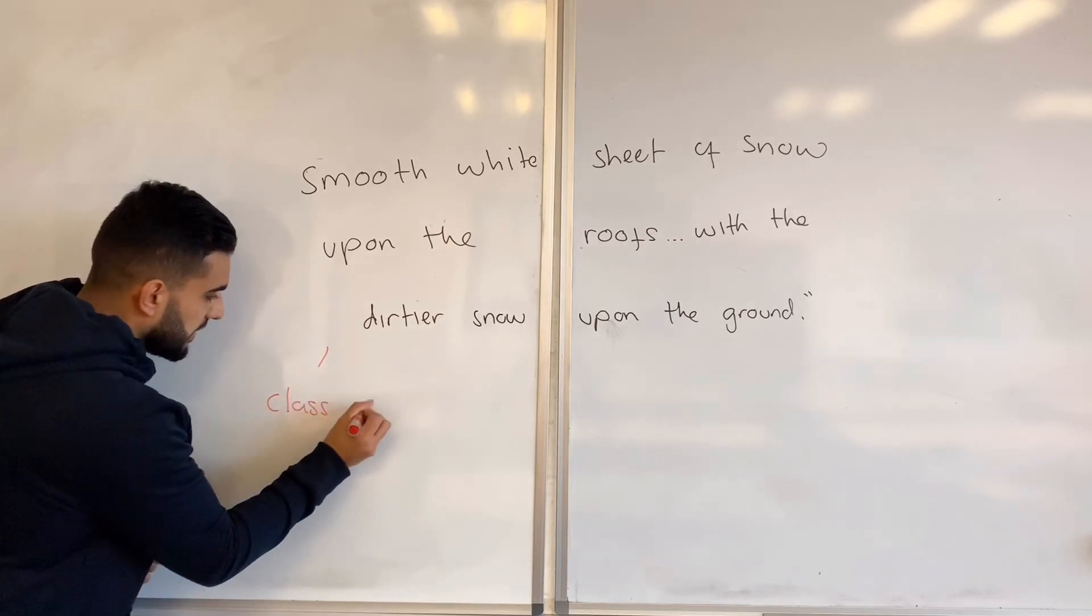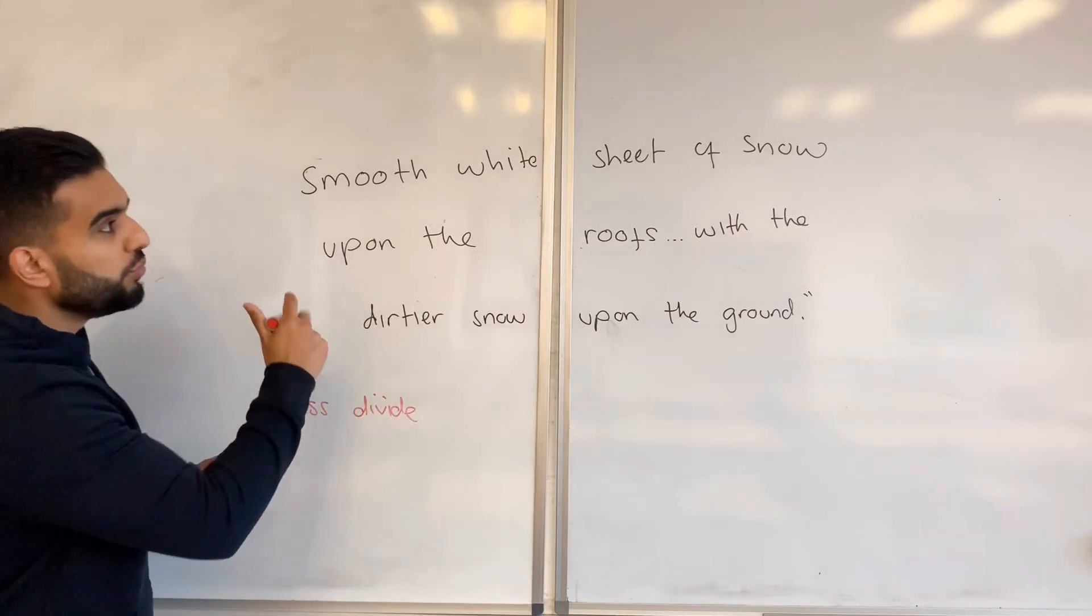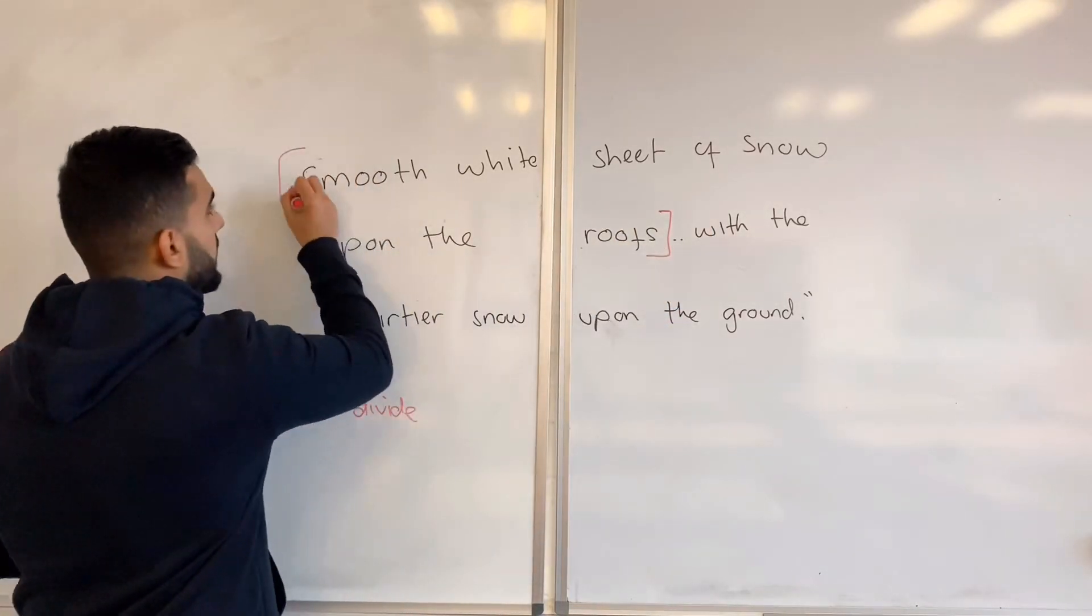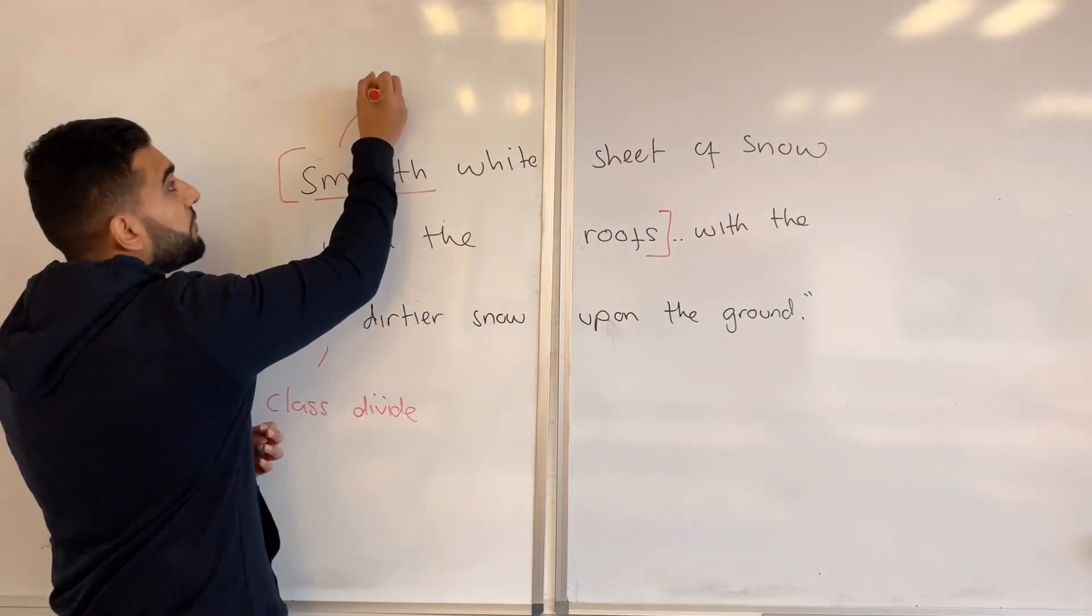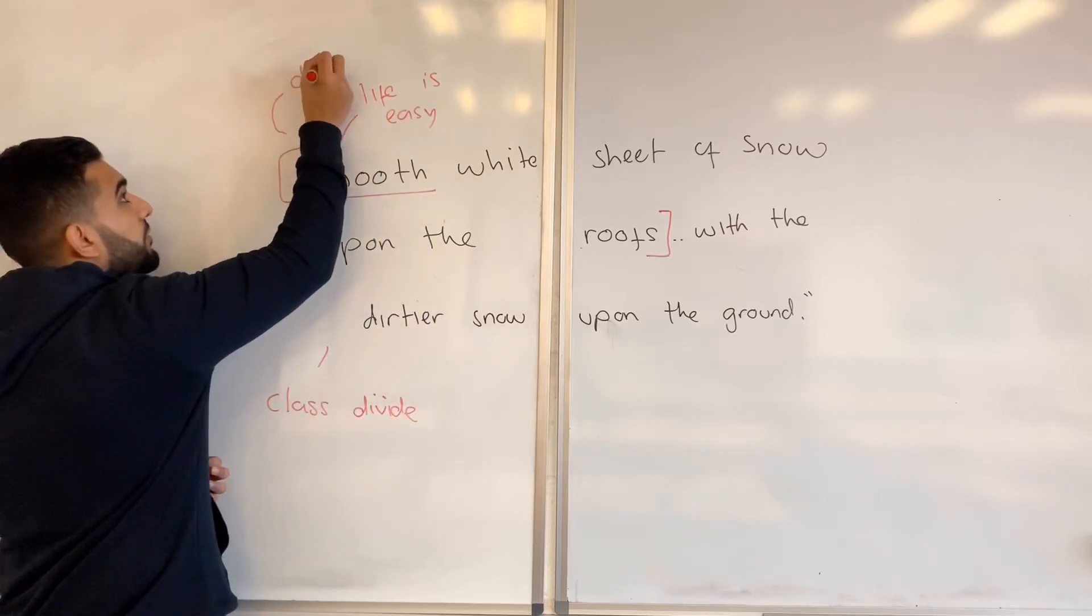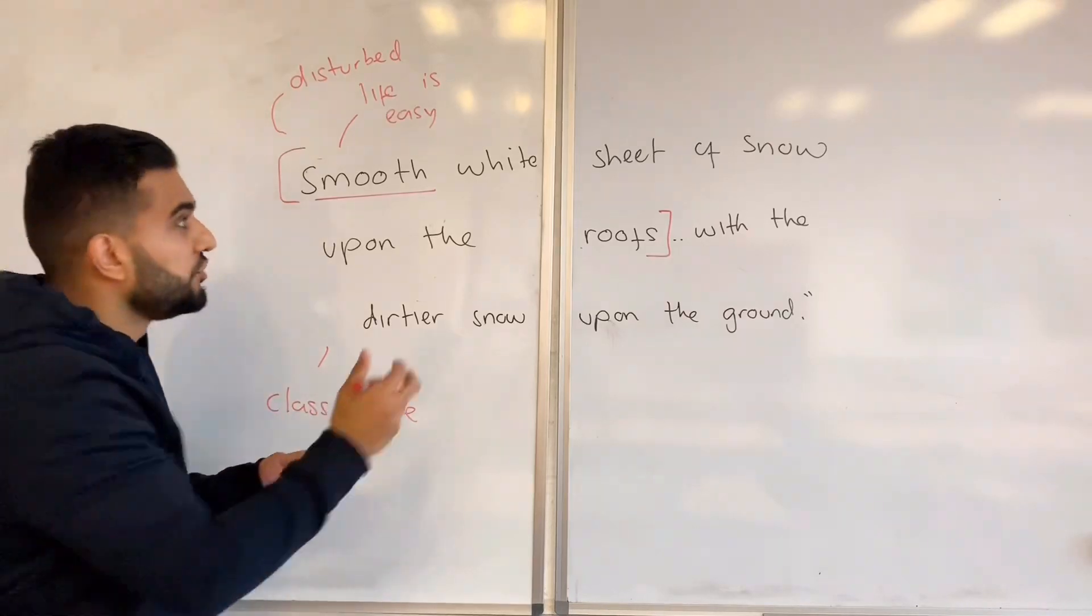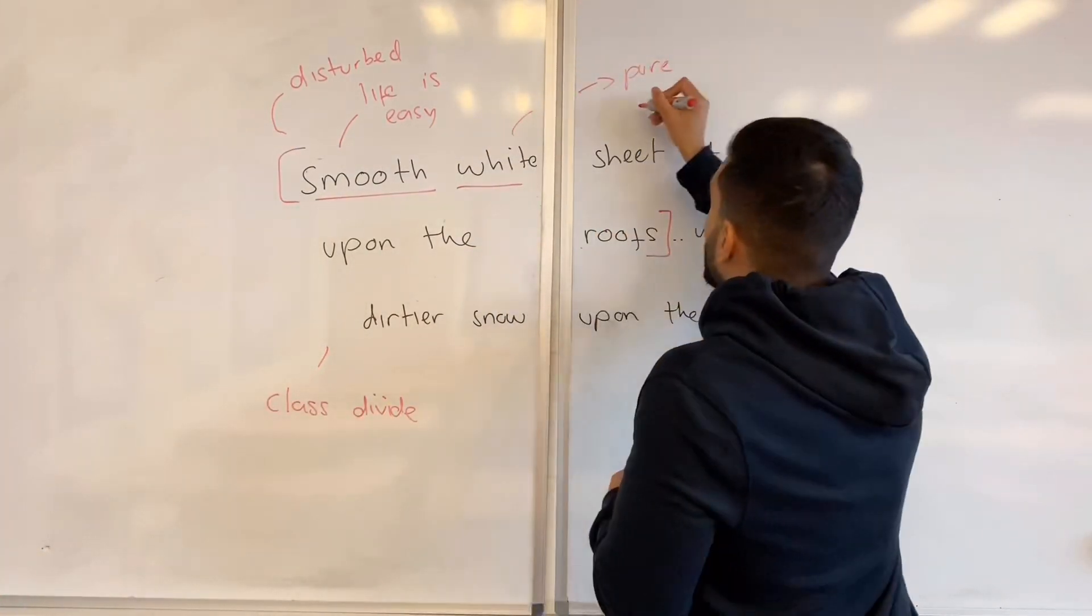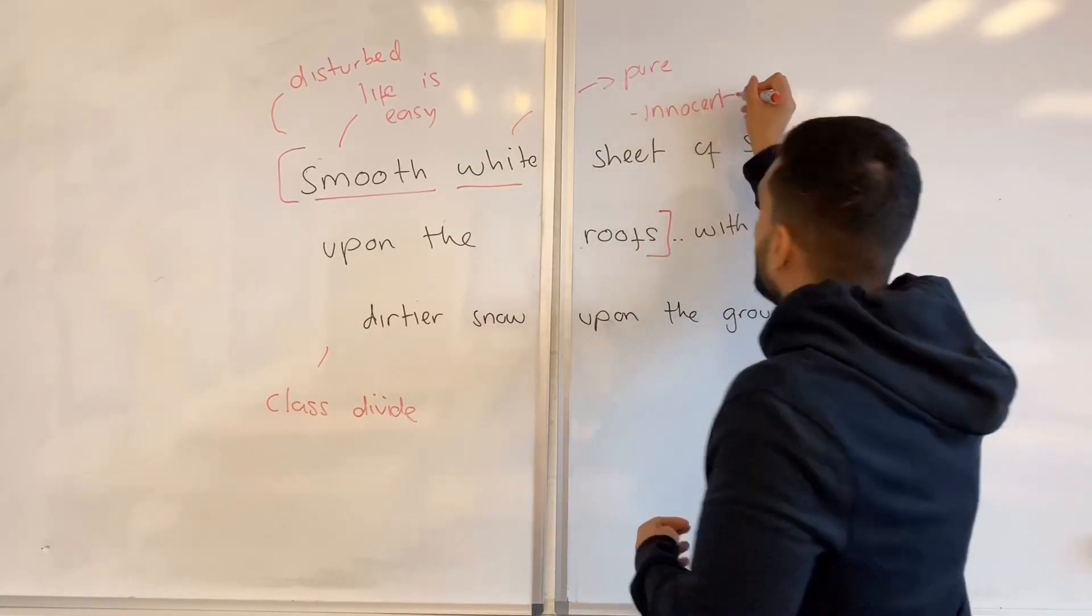Now you may ask how. The smooth white sheet of snow upon the roof - let's look at that part first. Smooth gives you the impression that life is easy for this snow. It's not disturbed, it's not troubled, very smooth, untouched. White gives the impression that it is quite pure, it is quite innocent.